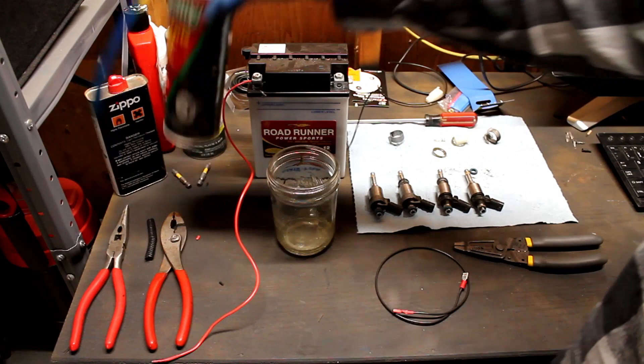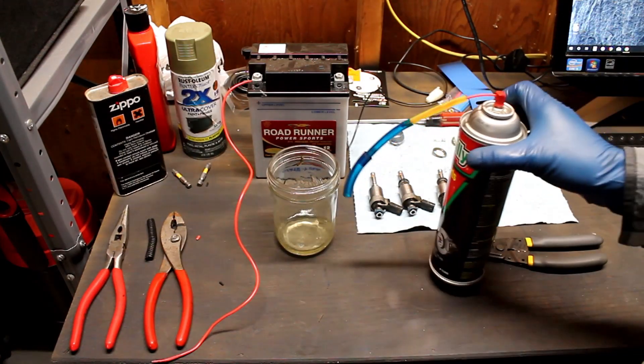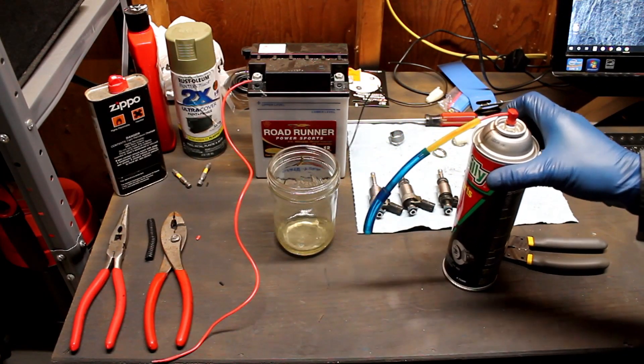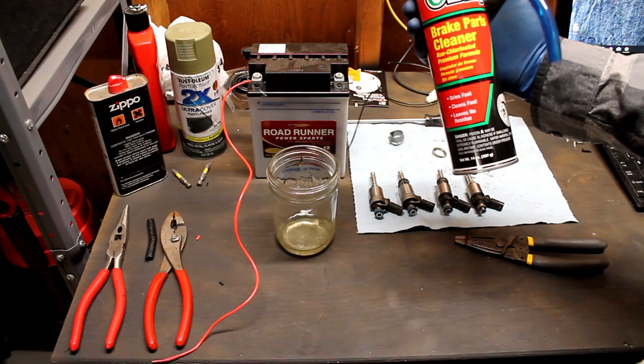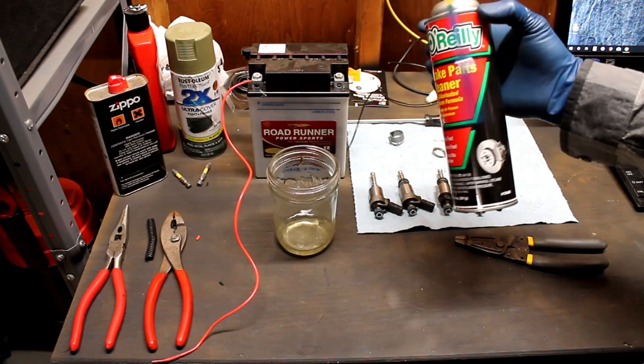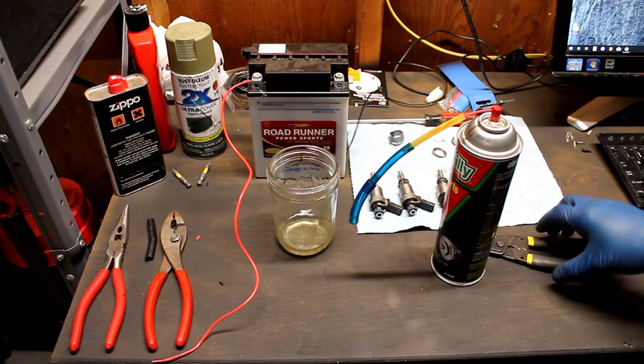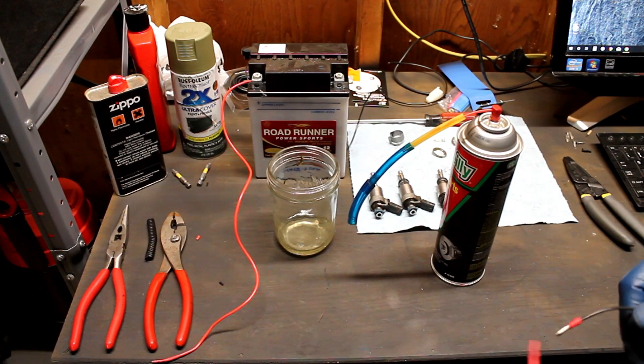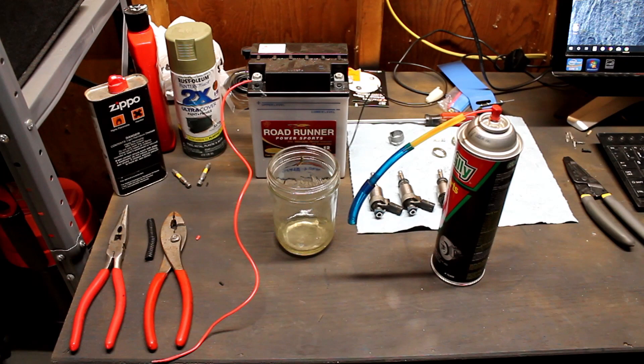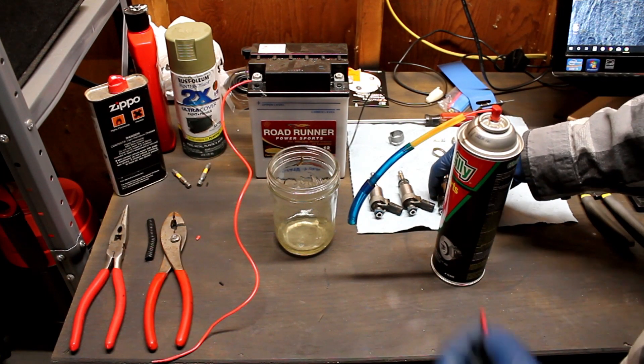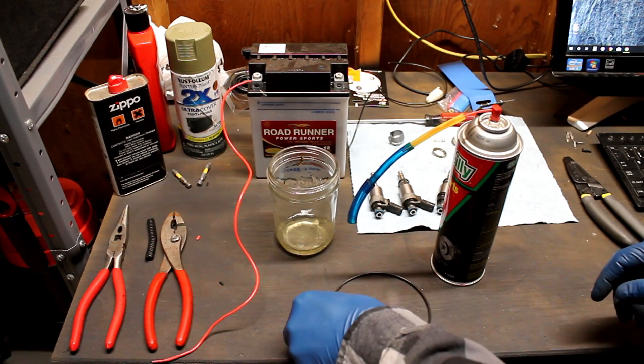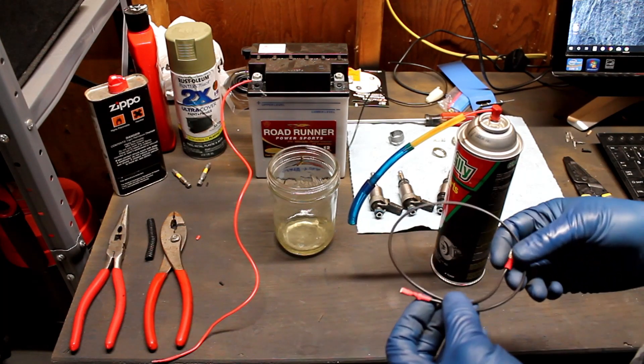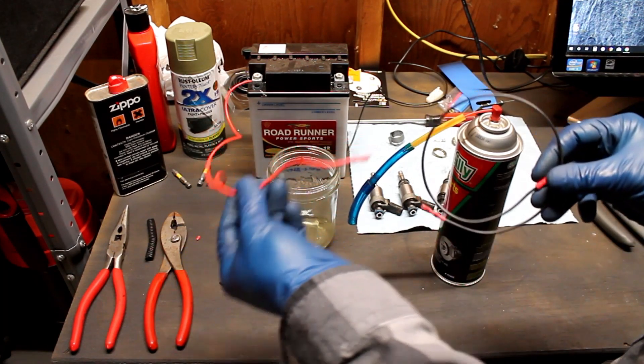What I have here is brake parts cleaner. You can use this, you can use carb cleaner, pretty much any solvent in an aerosol can. The aerosol can is just for the pressure we need to build. To test them, I've just gotten two jumper leads, I've got a battery, and I've got some terminal connectors on them.